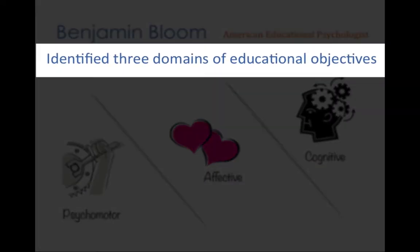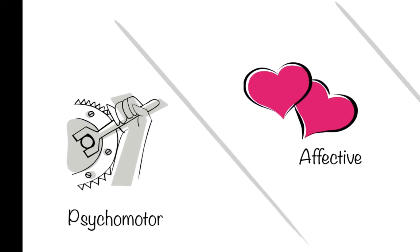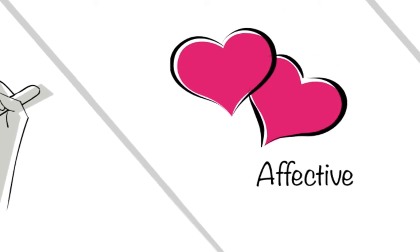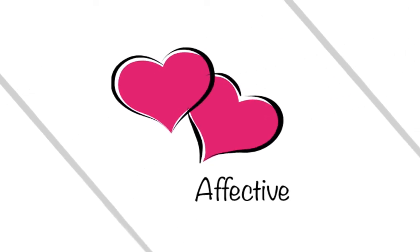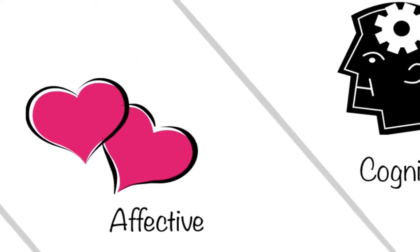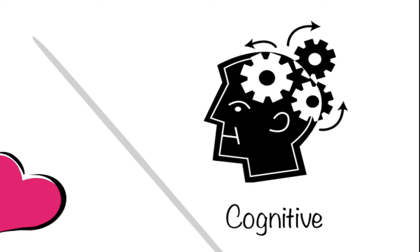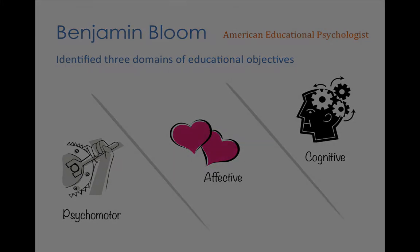Bloom identified three domains of educational objectives: psychomotor or manual skills like ability to physically manipulate a tool or an instrument; affective or emotional reactions like sympathy, empathy, values, motivations, and attitude; and cognitive or intellectual or mental skills like knowledge, comprehension, and critical thinking.